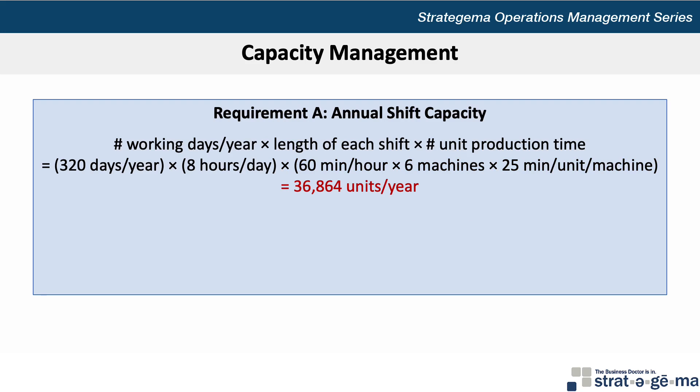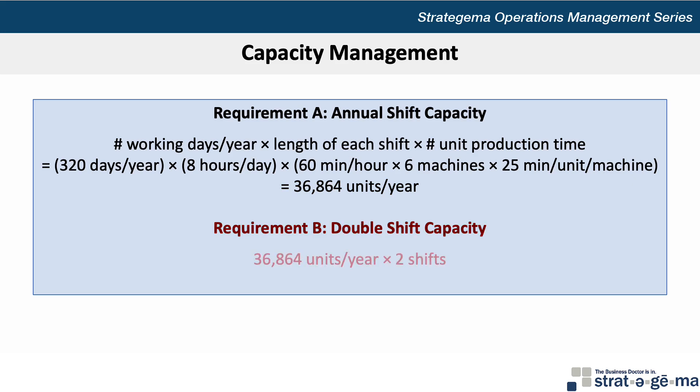For requirement B, which asks what the capacity would be if the shifts were doubled, we simply take the 36,864 units per year we just calculated and multiply by two shifts, resulting in a double shift capacity of 73,728 units per year.